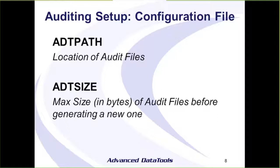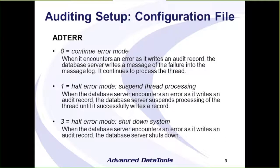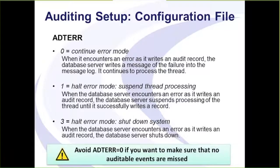ADT_SIZE controls how big you want the audit files to be. When they reach a certain size, it'll create a new file. ADT_ERR says what to do if an error is encountered when it can't write to the audit file. Zero just says carry on, log a message, and trigger the alarm program. You can use values of one or three for more severe actions: one suspends the thread triggering the event, and three will actually shut down Informix. If you use zero, be aware that some events may not be audited.